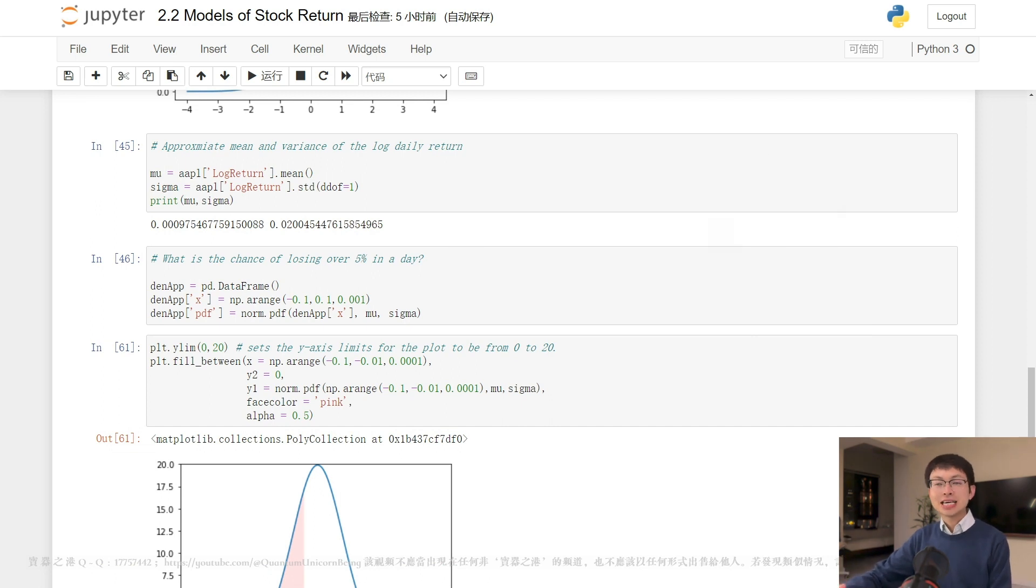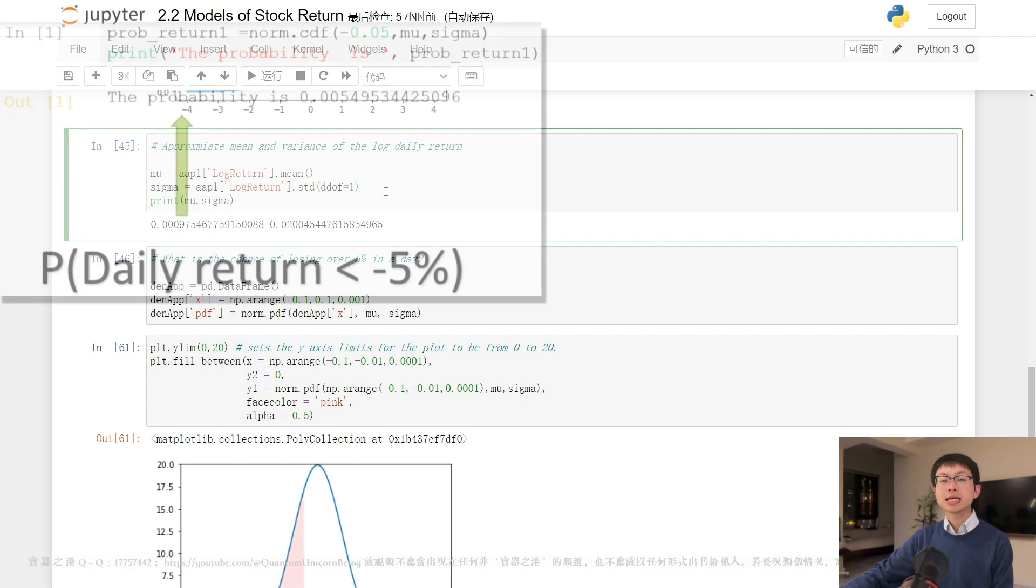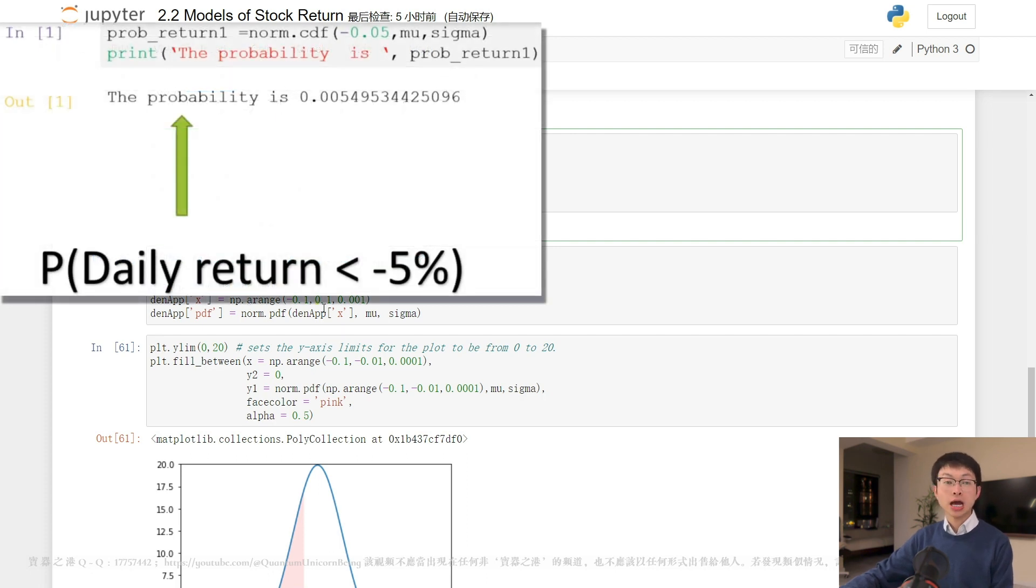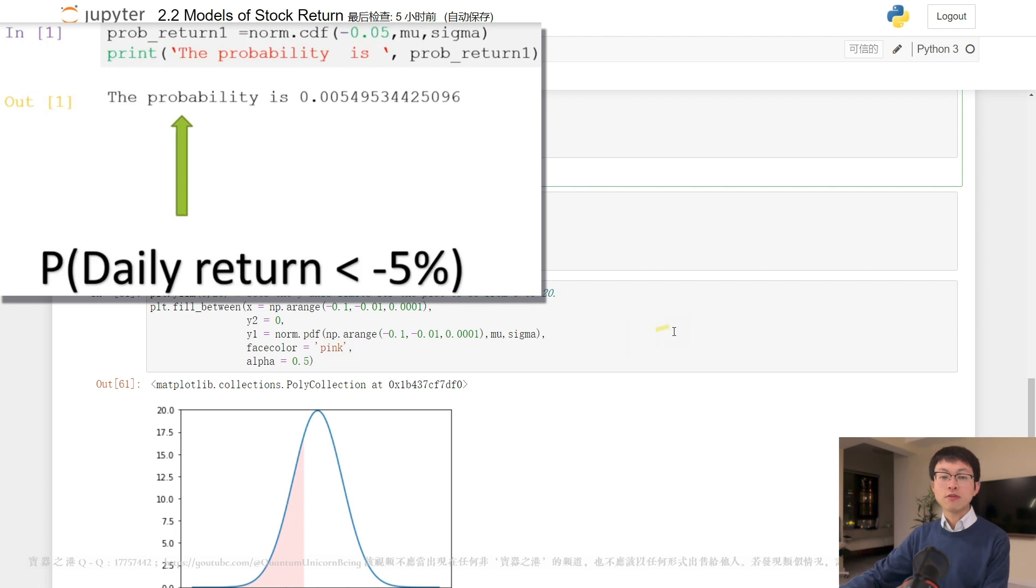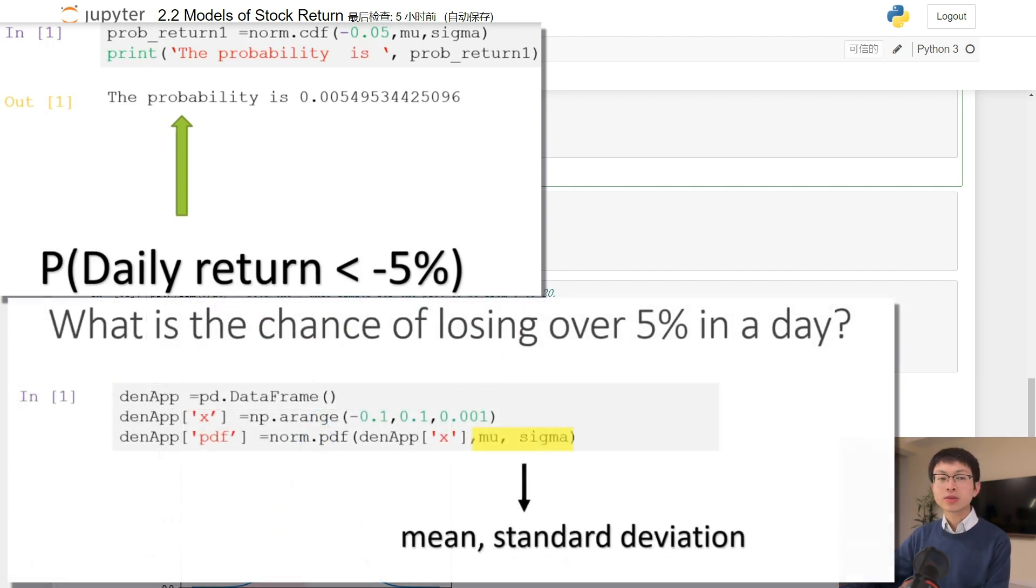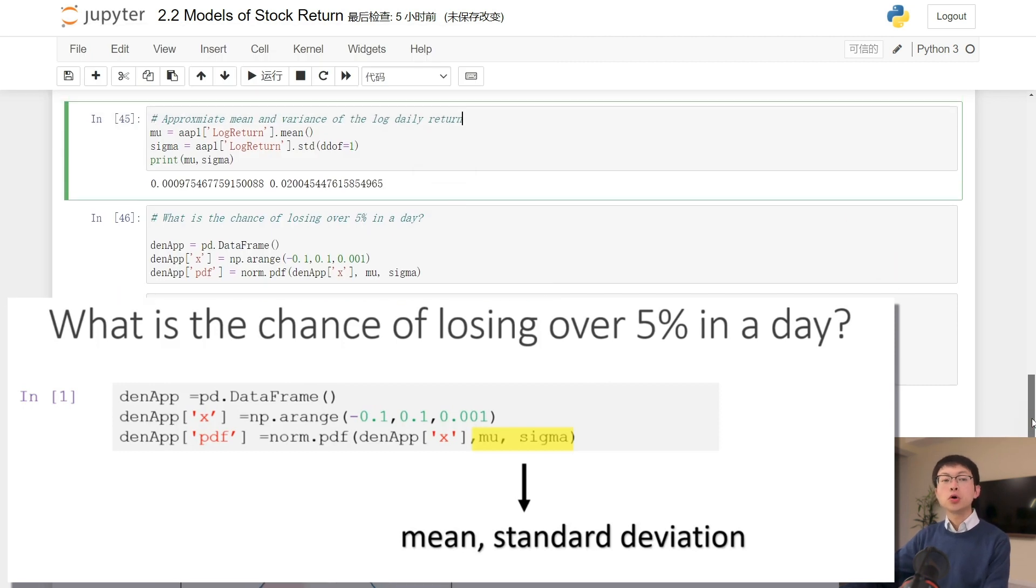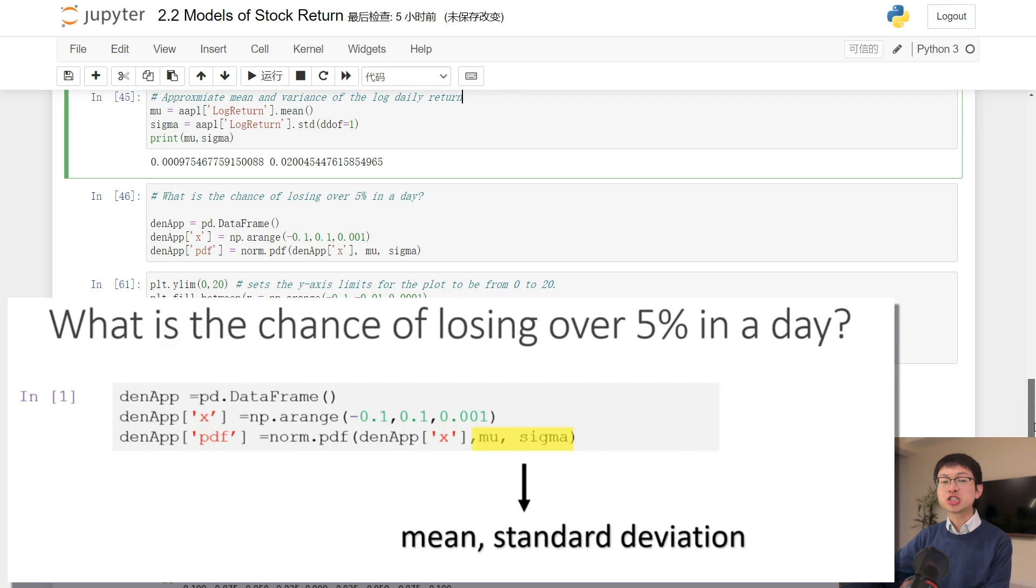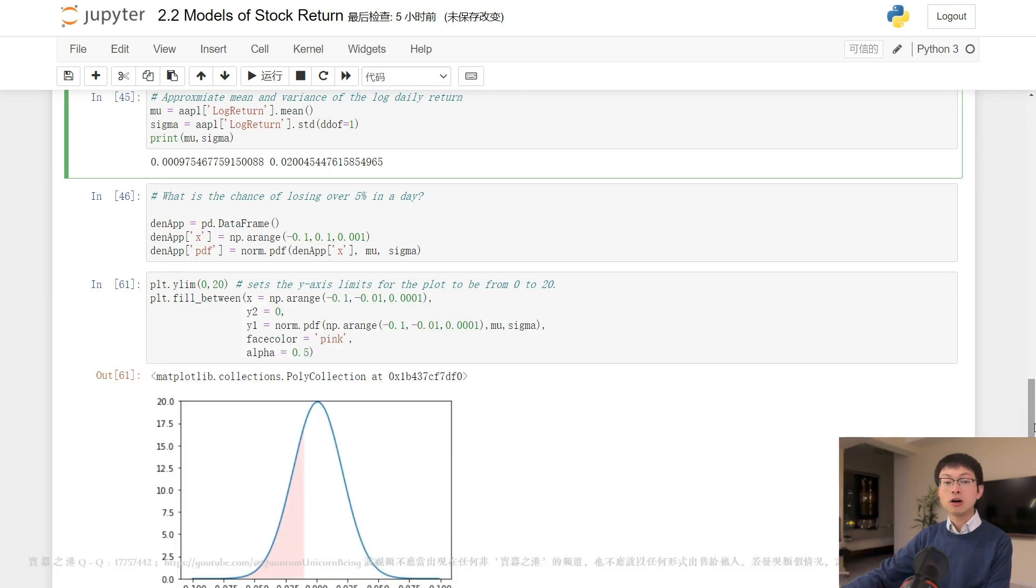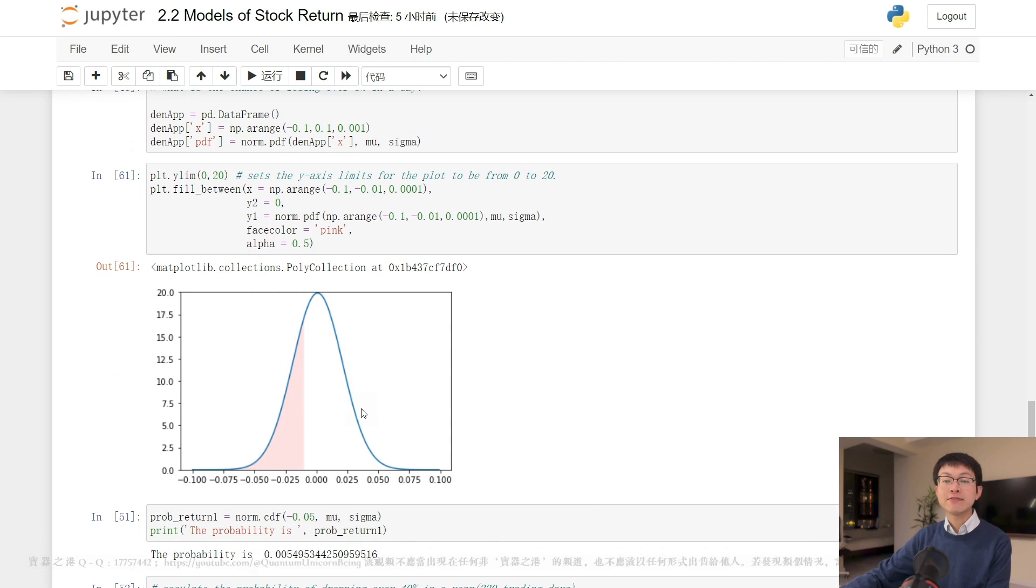For example, here our goal is to find out the probability that the daily loss could exceed 5%. To do so, we plot the normal density curve for daily returns and calculate the pink area, which represents the probability of losing more than 5% in a single day. Using the cumulative distribution function, we obtain a probability of 0.5%. Therefore, we have a 0.5% chance of experiencing a daily loss greater than 5%.